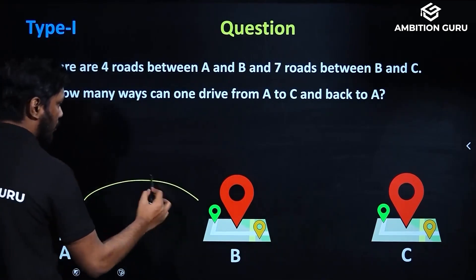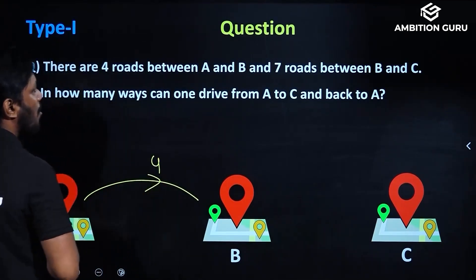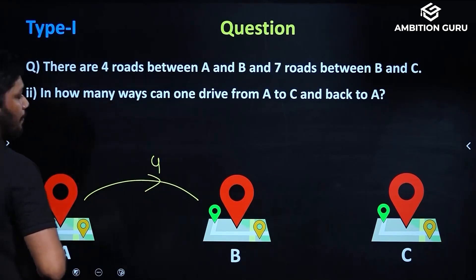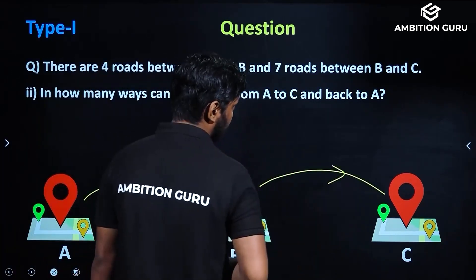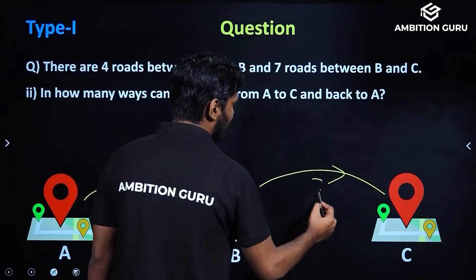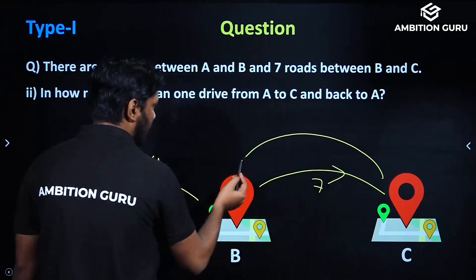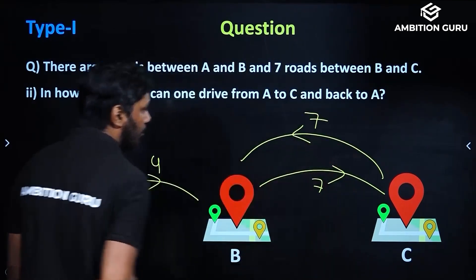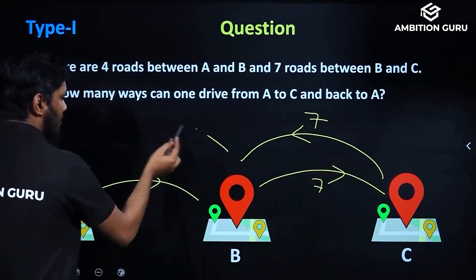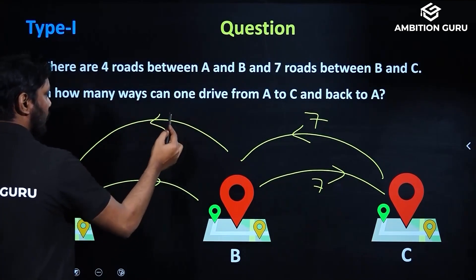So A to B, how many ways? 4 ways. B to C, how many ways? 7 ways. Again, C to B, how many ways? Again the same 7 ways. Then B to A, how many ways? 4 ways.